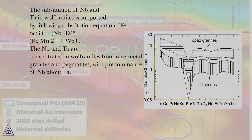The substitution of Nb and Ta in wolframites is supported by following substitution equation: Fe,Sc3+ + Nb,Ta5+ ↔ Fe,Mn2+ + W6+. The Nb and Ta are concentrated in wolframites from rare metal granites and pegmatites, with predominance of Nb about Ta.